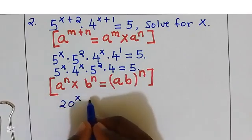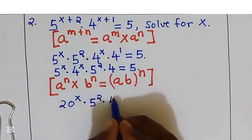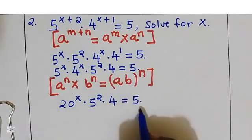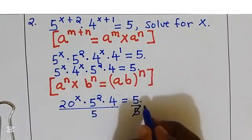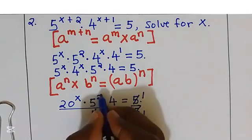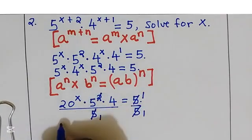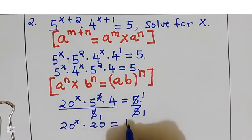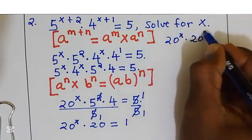We get 20 power x multiplied by 5 squared multiplied by 4, equal to 5. I'm going to divide by 5 throughout. 5 squared is 25, and 25 times 4 gives us 100; dividing by 5 gives 20. That gives us 20 power x multiplied by 20, equal to 1. We can write 20 as 20 power 1.